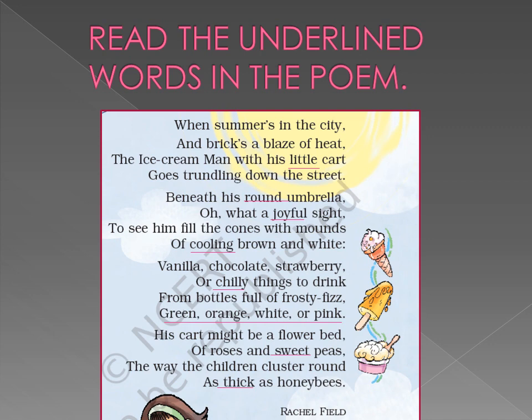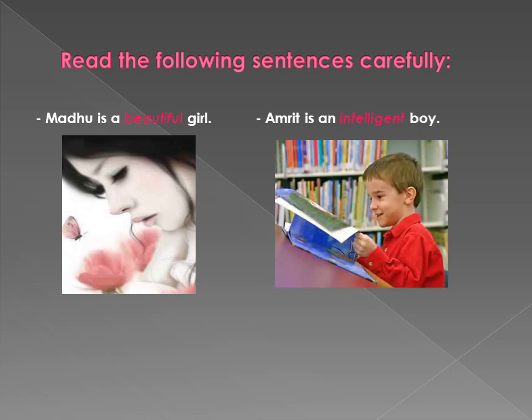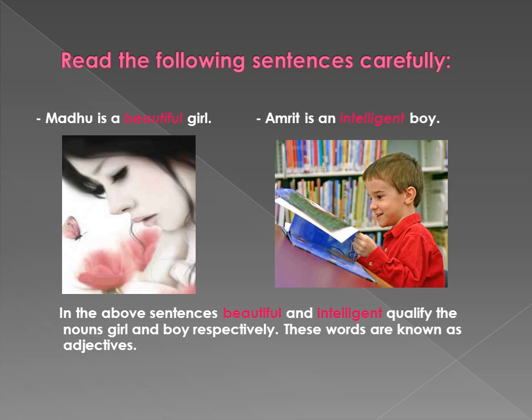They are used to describe the noun. Read the following sentences: 'Madhu is a beautiful girl. Amrit is an intelligent boy.' In the above sentences, beautiful and intelligent qualify the noun girl and boy respectively. These words are known as adjectives.